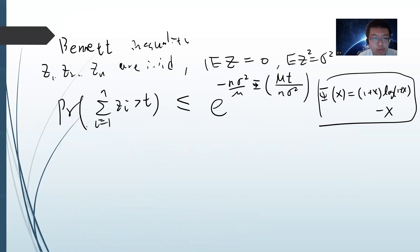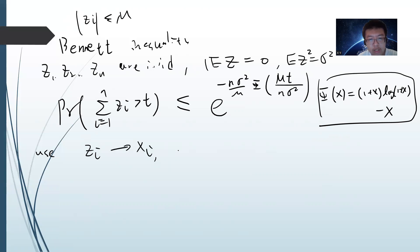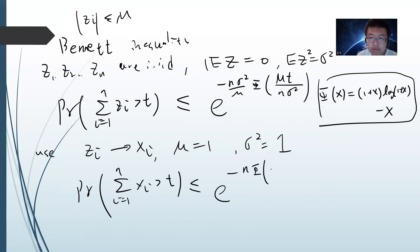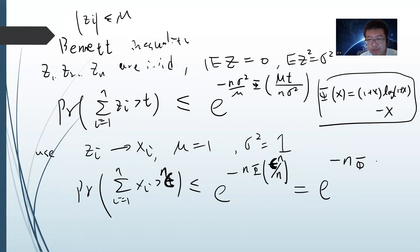Our goal is just to use this inequality. Since zi is bounded by m, we use the Bernoulli case: we replace each zi with xi, so m equals one because it's a Bernoulli variable, and sigma squared is also one. So we get the probability that the sum of xi from i equals one to n is greater than t, which gives us exponential of minus n times phi of t divided by n. Changing t to n times epsilon for convenience, this simplifies to exponential of minus n times phi of epsilon.